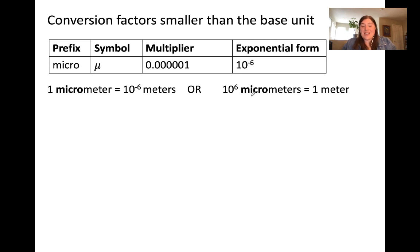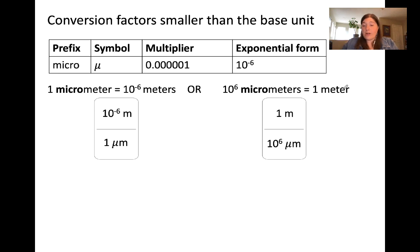Said another way, how many of the small unit fit into the base unit. These can be expressed as fractions as well. 10 to the negative 6 meters is equivalent to 1 micrometer, or 1 meter is equivalent to 10 to the 6 micrometers. Again, these are completely equivalent mathematically, and you can choose to use whichever one makes more sense to you.